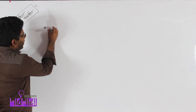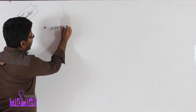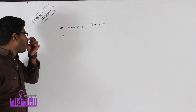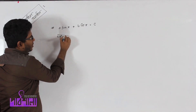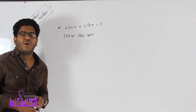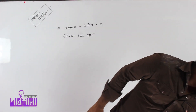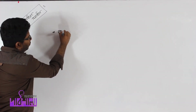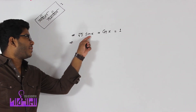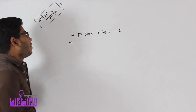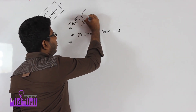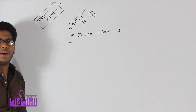Now let's take a look at the next problem. We have to write a·sin x plus b·cos x equal to c. This is the standard form where a·sin x plus b·cos x equals c.